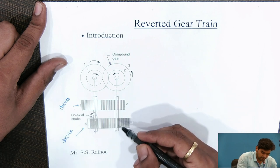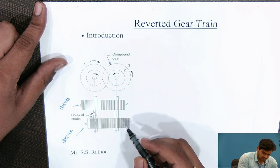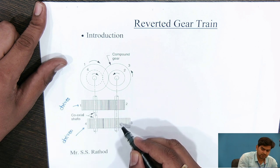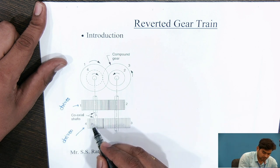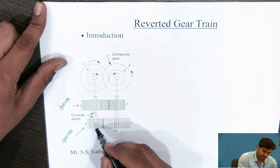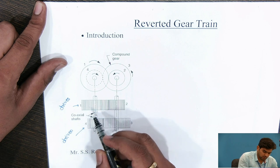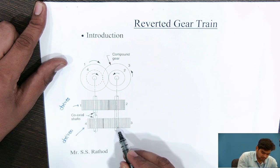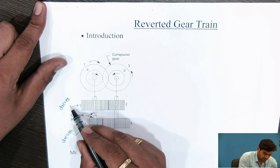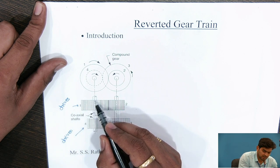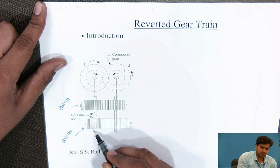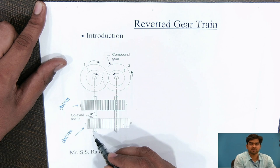Gear number 2 and gear number 3 are mounted on the same shaft, so they rotate with the same speed. Motion is transmitted from gear 1 to gear 2, then gear 3 to gear 4, the driven gear. The input shaft and output shaft are coaxial, which is why it is called a reverted gear train.